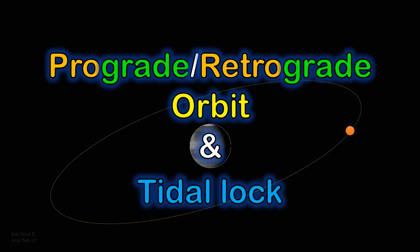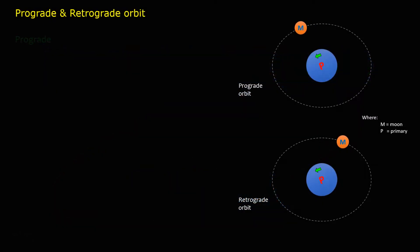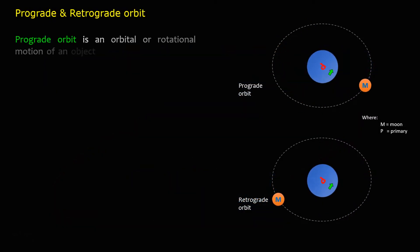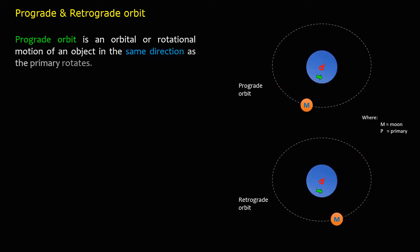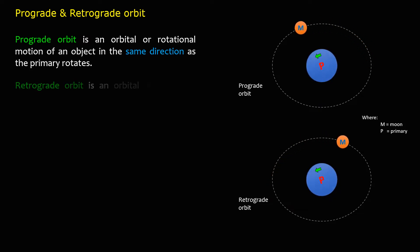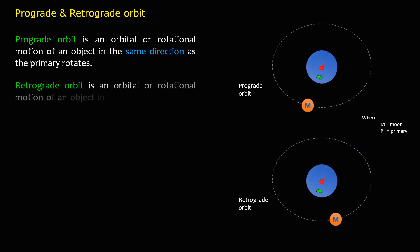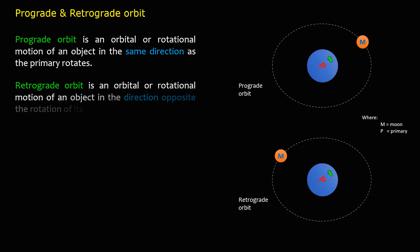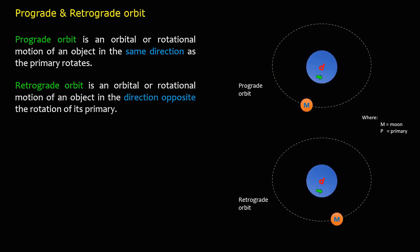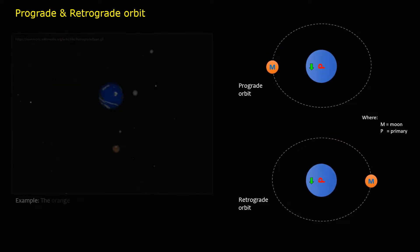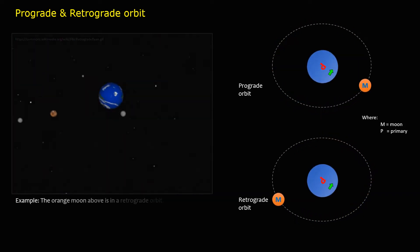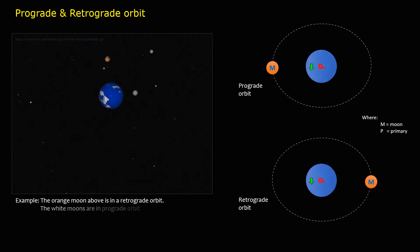Prograde orbit is an orbital or rotational motion of an object in the same direction as the primary rotates. Retrograde orbit is an orbital or rotational motion of an object in the direction opposite the rotation of its primary. For example, the orange moon shown is in a retrograde orbit, while the white moons are in prograde orbit.